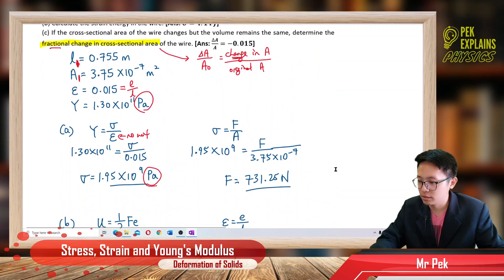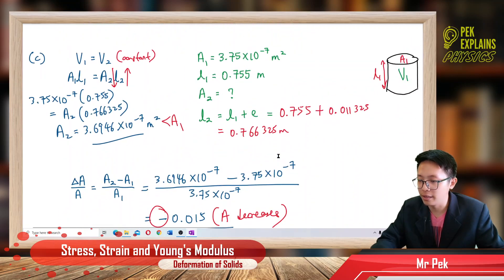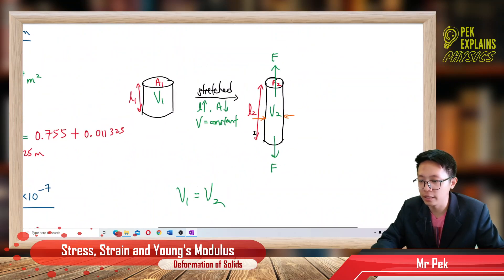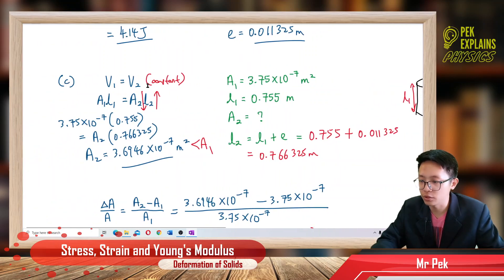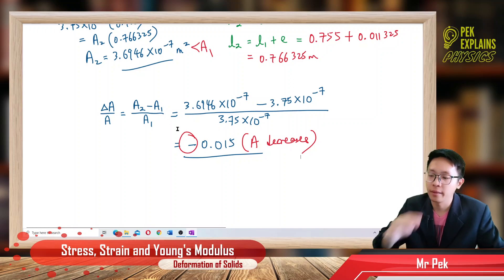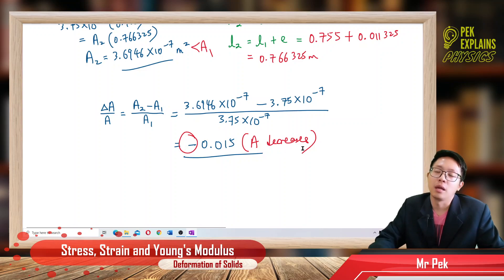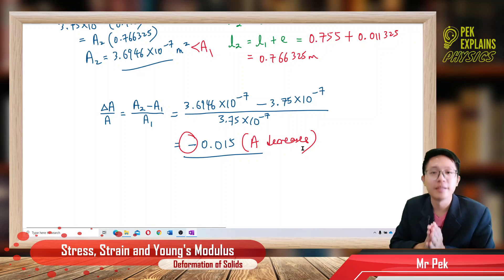Very easy questions — just apply all the formulas: Young's modulus, stress, strain energy, and strain. Remember: when you stretch a wire, the length increases but the area will decrease (shrink). Volume is normally constant. Fractional change means the change in area divided by the original value. A negative fractional change means something is decreasing. That's all for these questions — see you again!